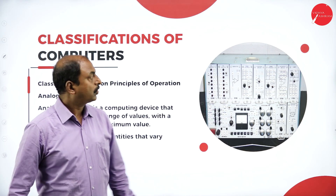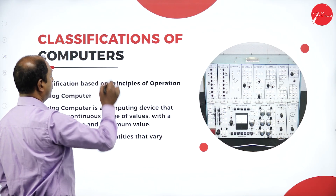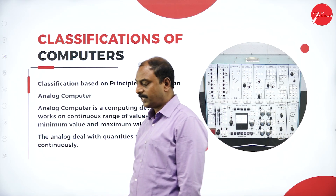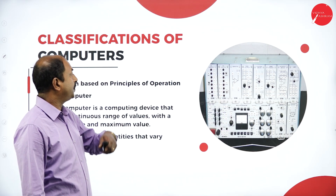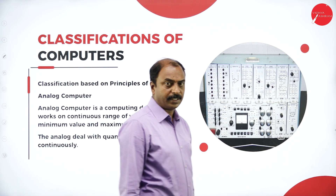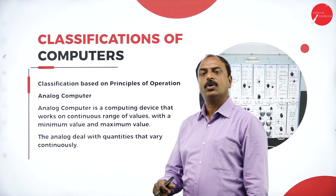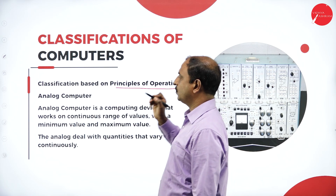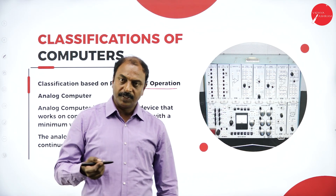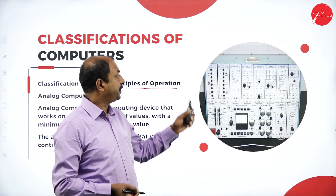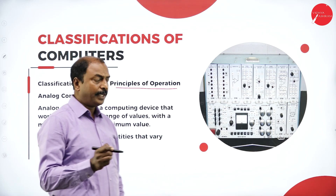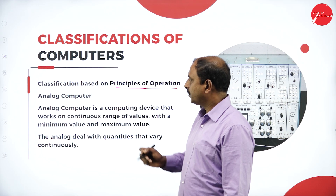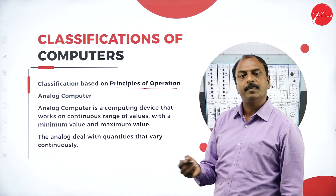Next, let us look at the classification of computers. As we have learned the history of computers and generations of computers, the next topic is classification of computers. This classification can be done on two or three categories. One is classification based on the principle of operation or working of the computer system. Based on that, we have three types: analog computer, digital computer, and hybrid computer.